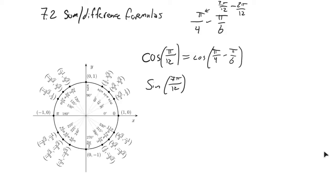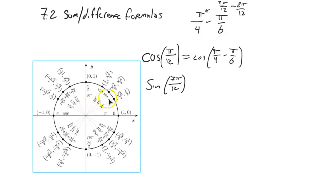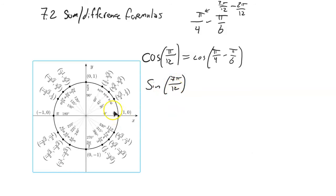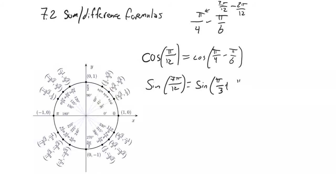The nice thing about pi over 4 and pi over 6 is I know exact values of those. And 7pi over 12 can be built up as pi over 3 plus pi over 4. Think about them both in terms of 12s: this is 4pi over 12, and this is 3pi over 12, and that adds to 7pi over 12.